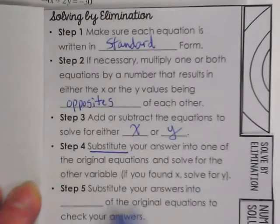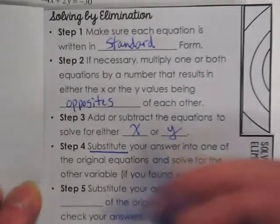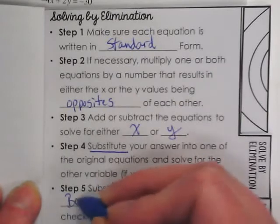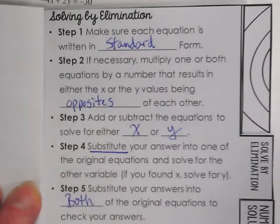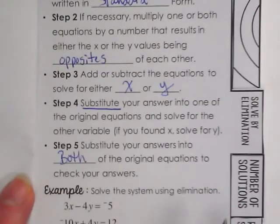Step five. Substitute your answers into both of the original equations to check your answer. So let's do the solving of this system here. Be prepared to write small.